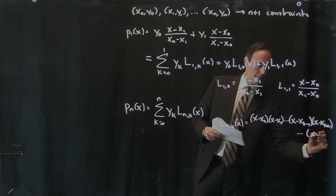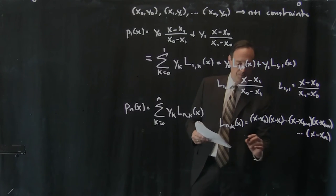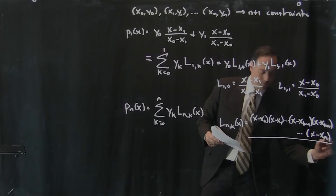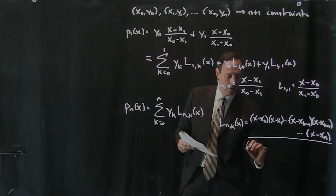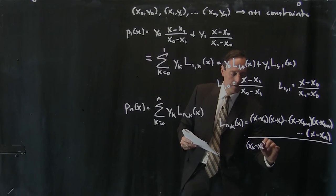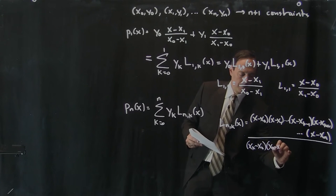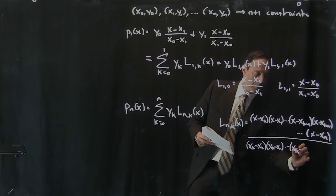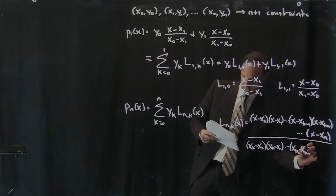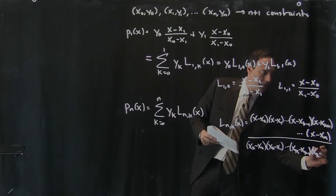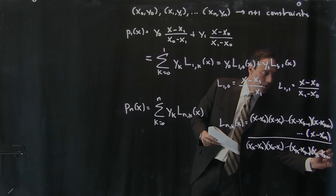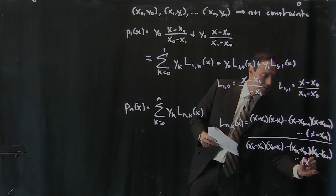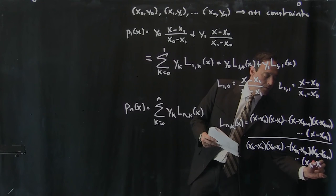All divided by xk minus x naught, xk minus x1, xk minus x of k minus 1, xk minus x of k plus 1, dot dot all the way to xk minus x of n.